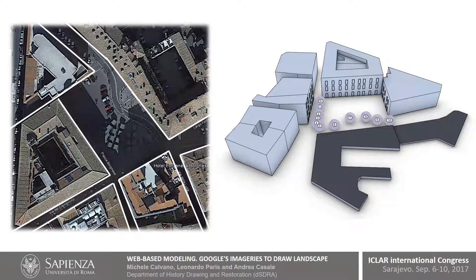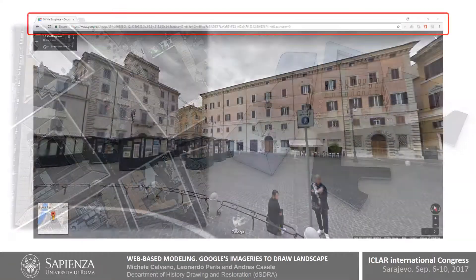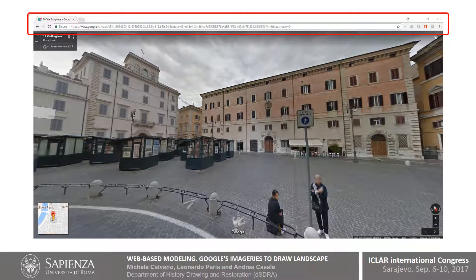Let's start from the case study. The case study is Piazza Borghese in Rome, home of our department, where there are 11 shots. With Google Maps, we go into the panorama that is in the center of Piazza Borghese. We want to reconstruct the building in front of us.